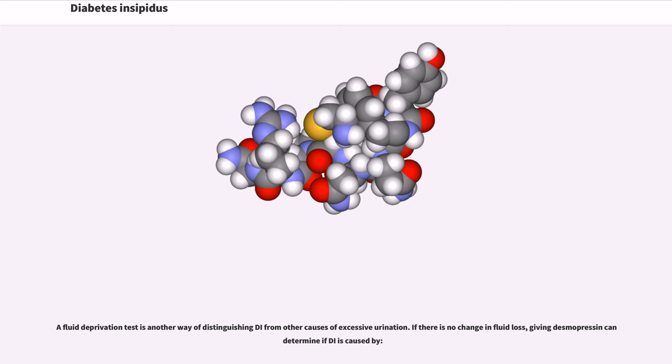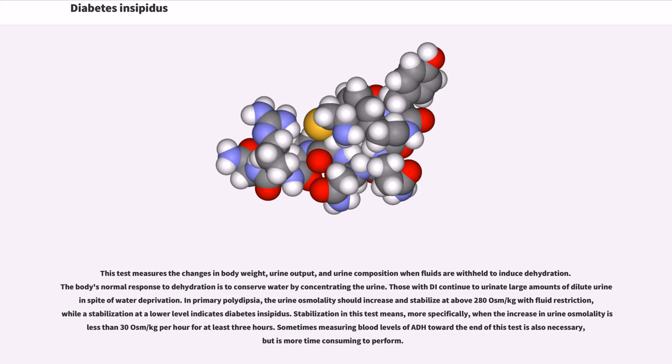A fluid deprivation test is another way of distinguishing DI from other causes of excessive urination. If there is no change in fluid loss, giving desmopressin can determine if DI is caused by. This test measures the changes in body weight, urine output, and urine composition when fluids are withheld to induce dehydration. The body's normal response to dehydration is to conserve water by concentrating the urine. Those with DI continue to urinate large amounts of dilute urine in spite of water deprivation.